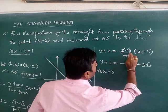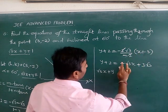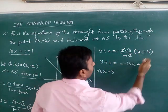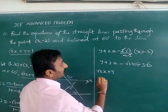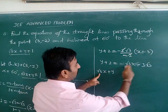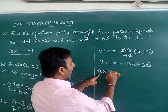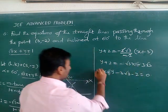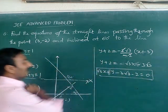When I take all the terms to right side, root 3x minus y minus 3 root 3 minus 2 equal to 0. This is the first one.